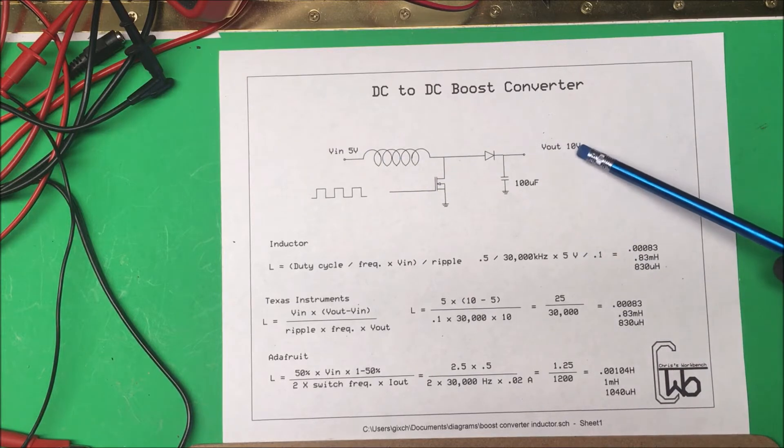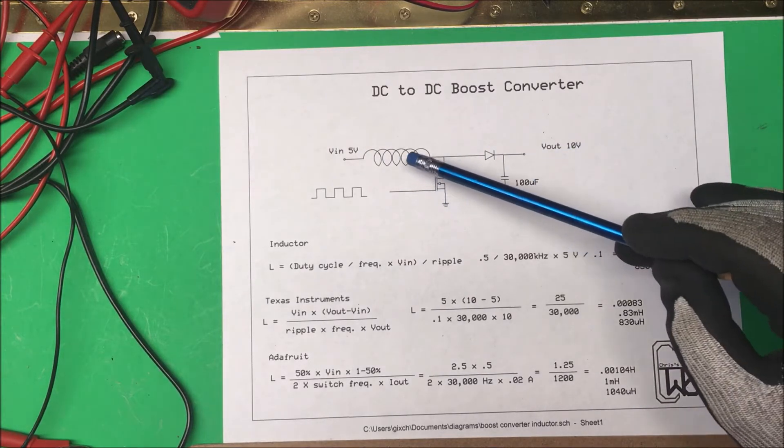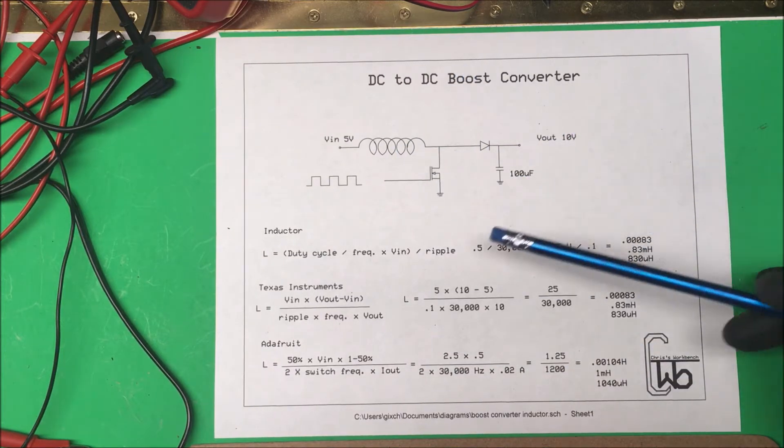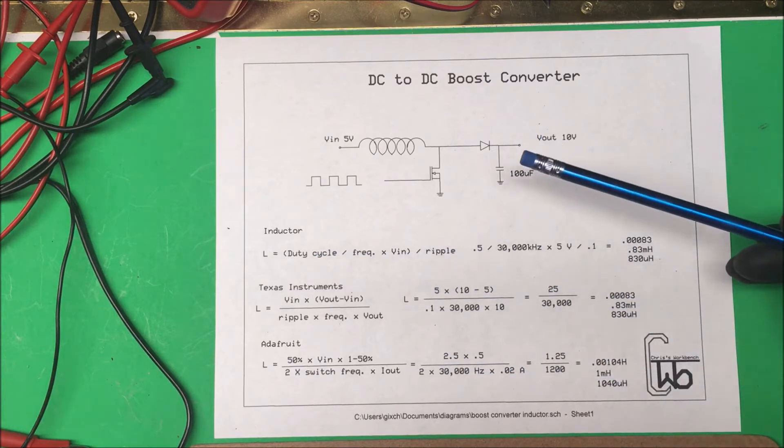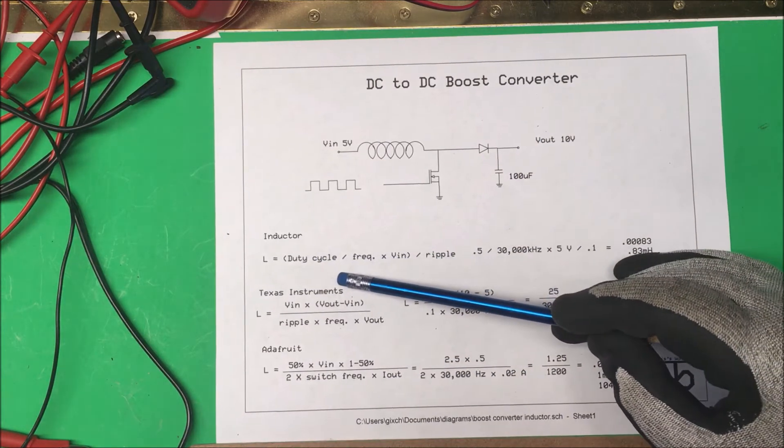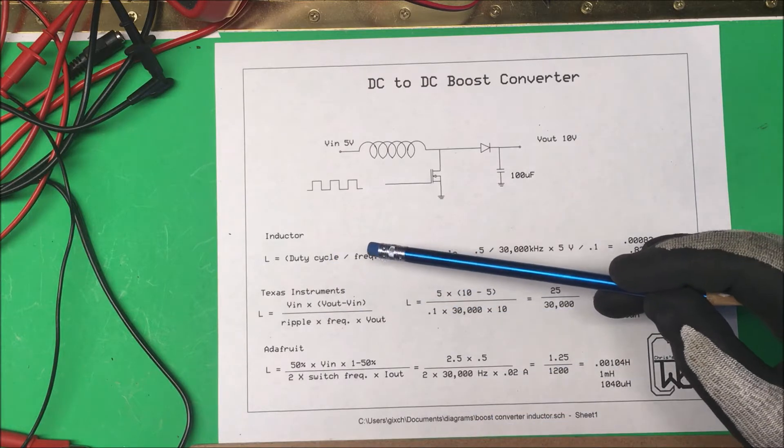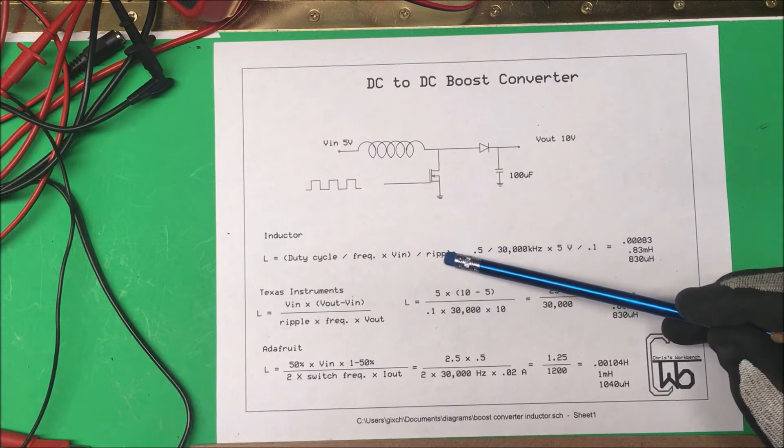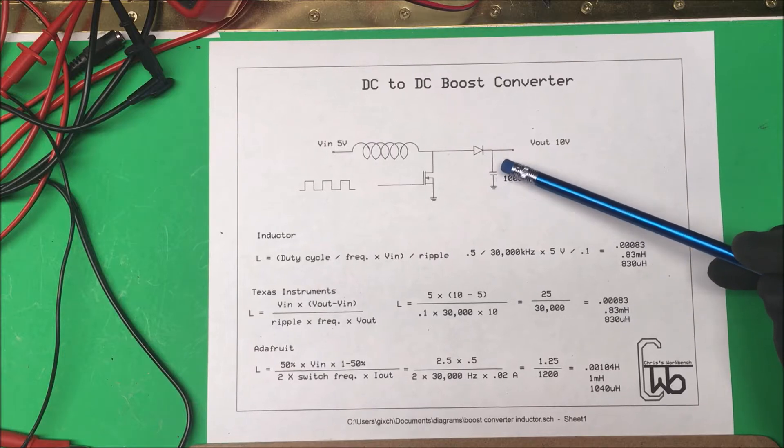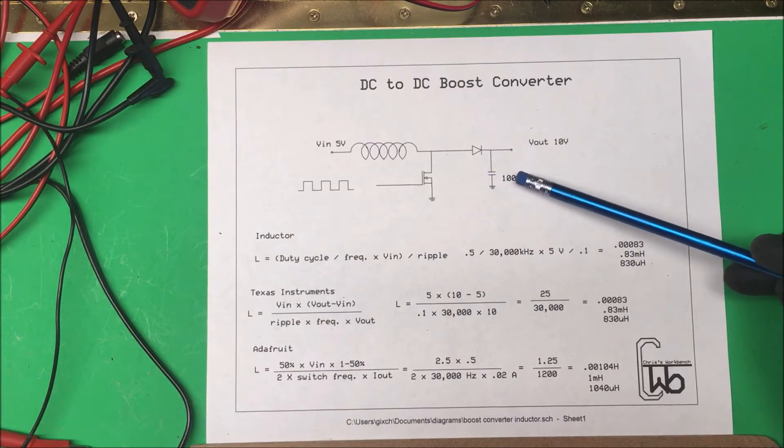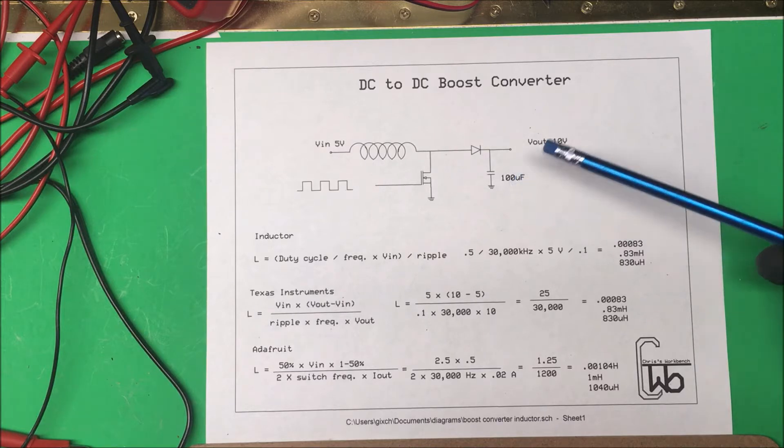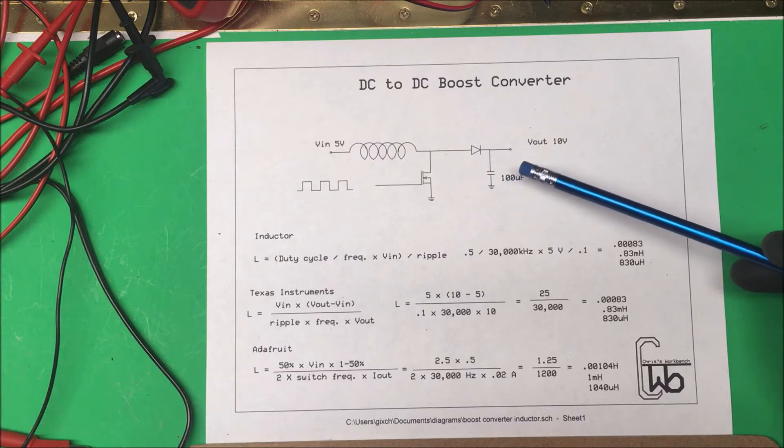I want to put in 5 volts and get 10 volts out. To find the inductor to use, there are several ways. I wrote down three different formulas. For this one, you take the duty cycle, which for me is 50%, times V in divided by the frequency times the ripple. The ripple is determined by the capacitance out here. I've only got a 100 microfarad capacitor, so I'm guessing the ripple is going to be 10%.